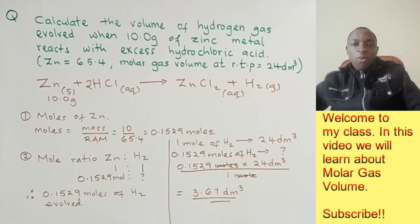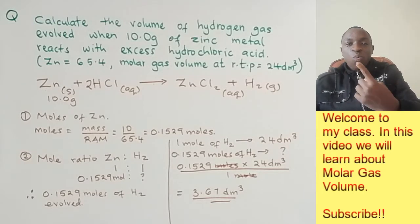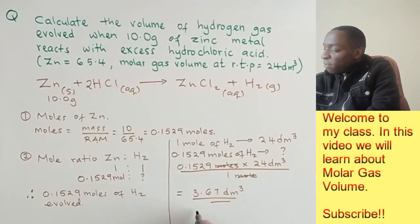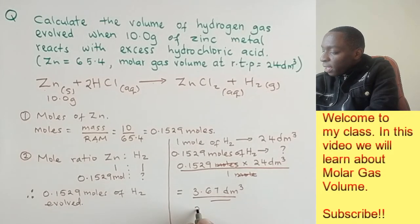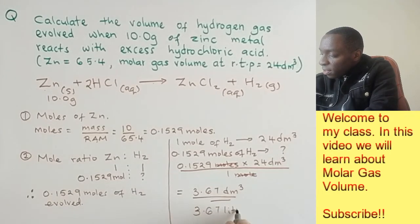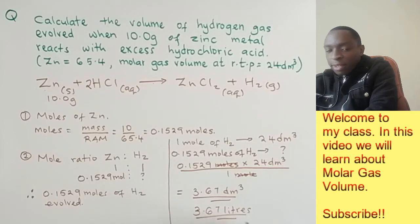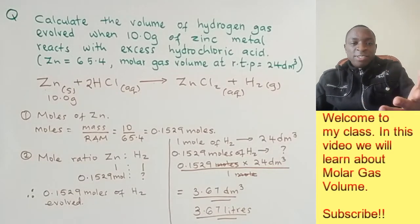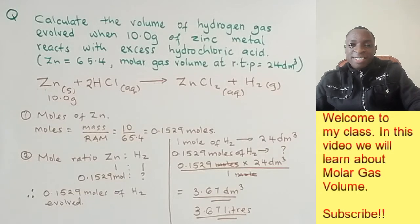That's your answer. We said that 1 dm³ equals 1 liter, so we can also have this answer as 3.67 liters. It's the same thing. That was the first example. Pretty easy, right? Now let's head to the next one.